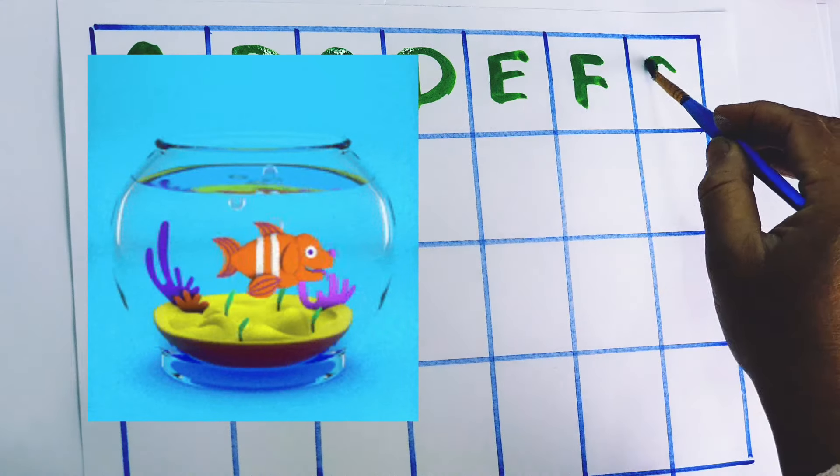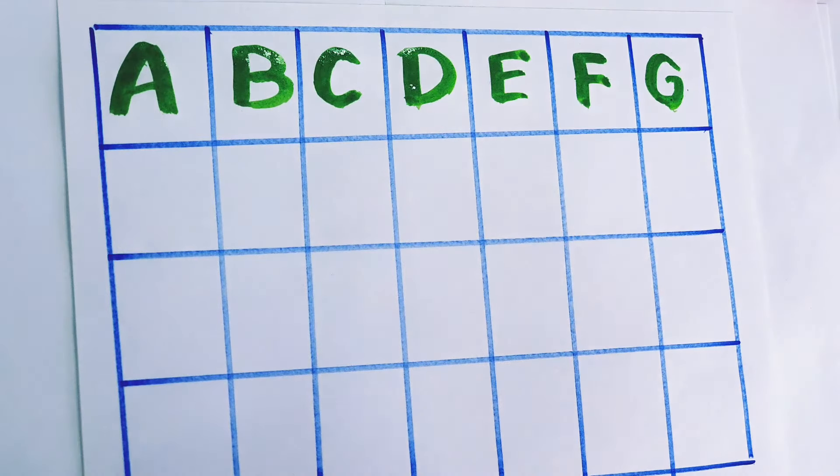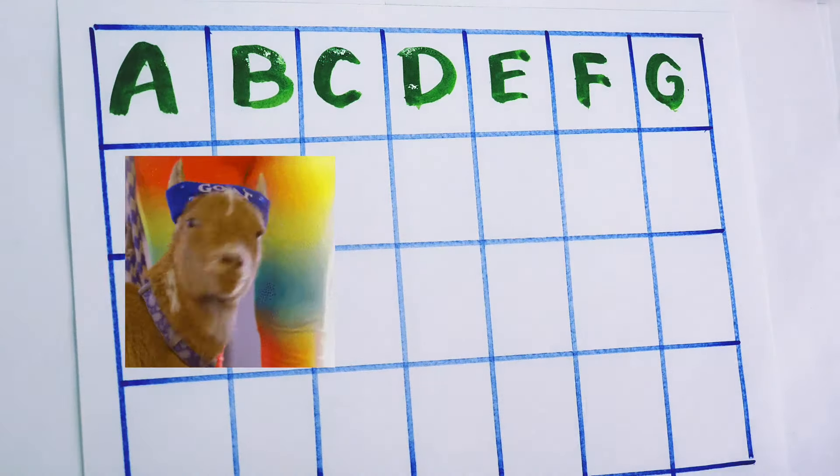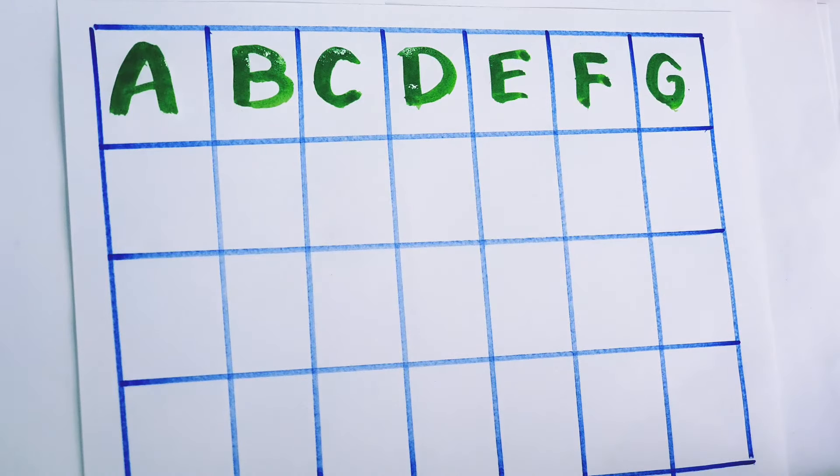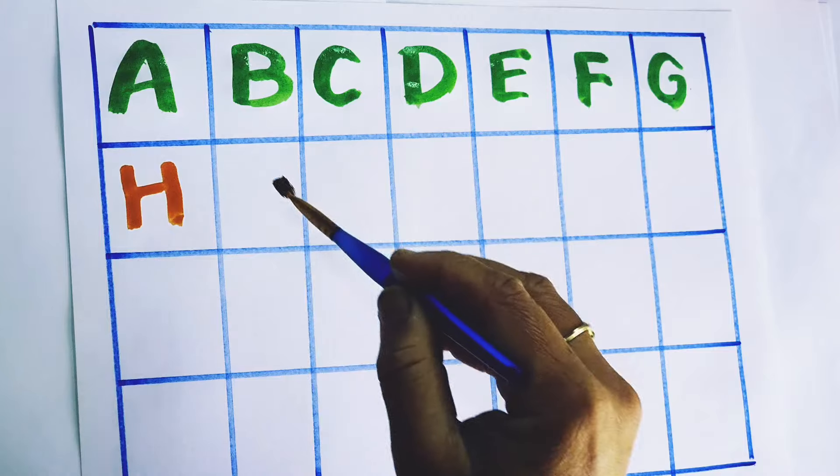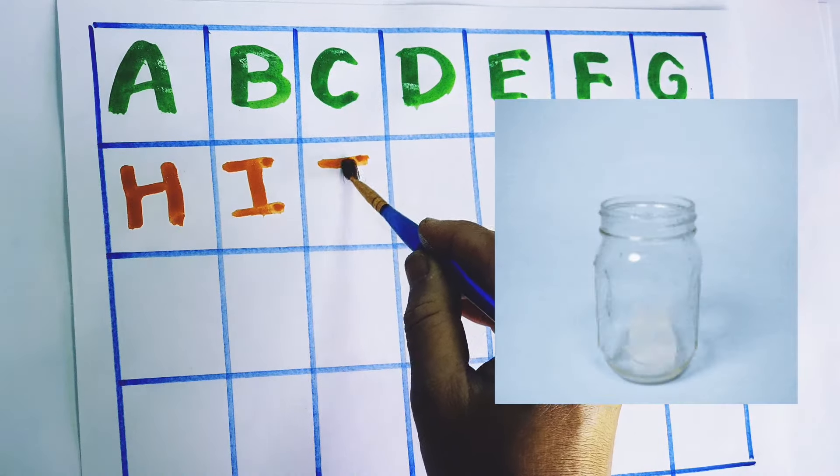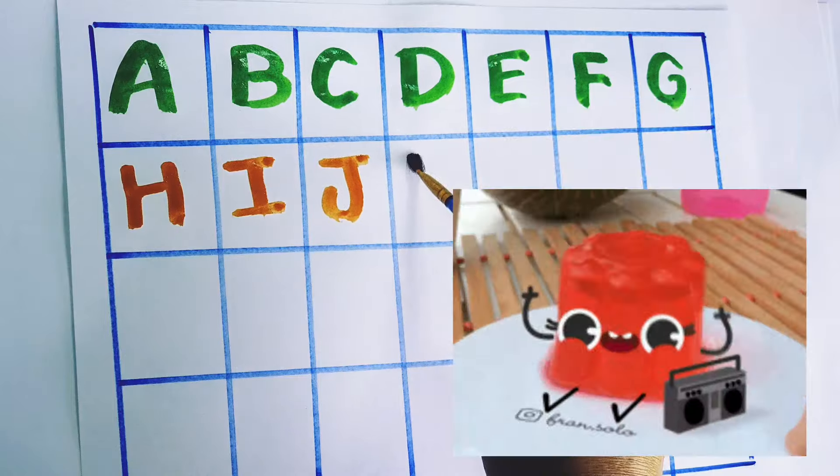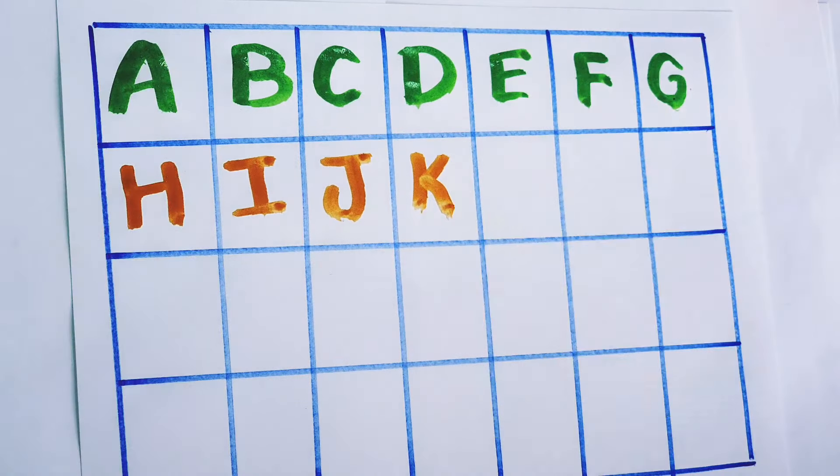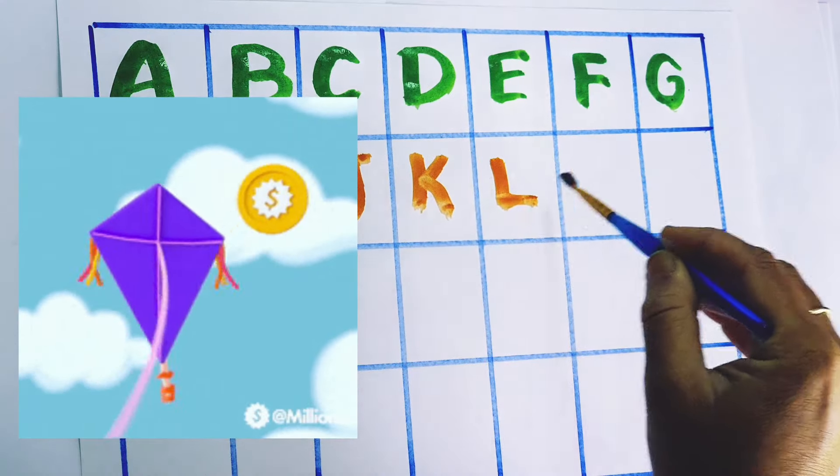G for goat. Orange color: H for hen, I for ice, J for jelly, K for kite, L for lion.